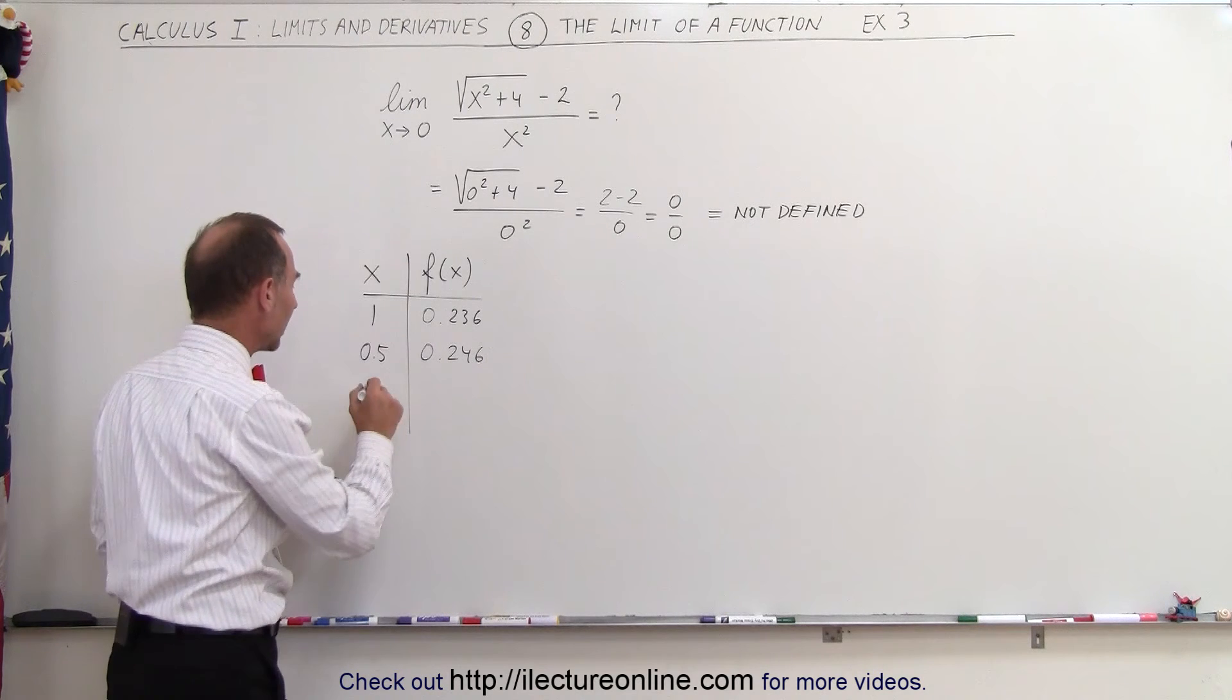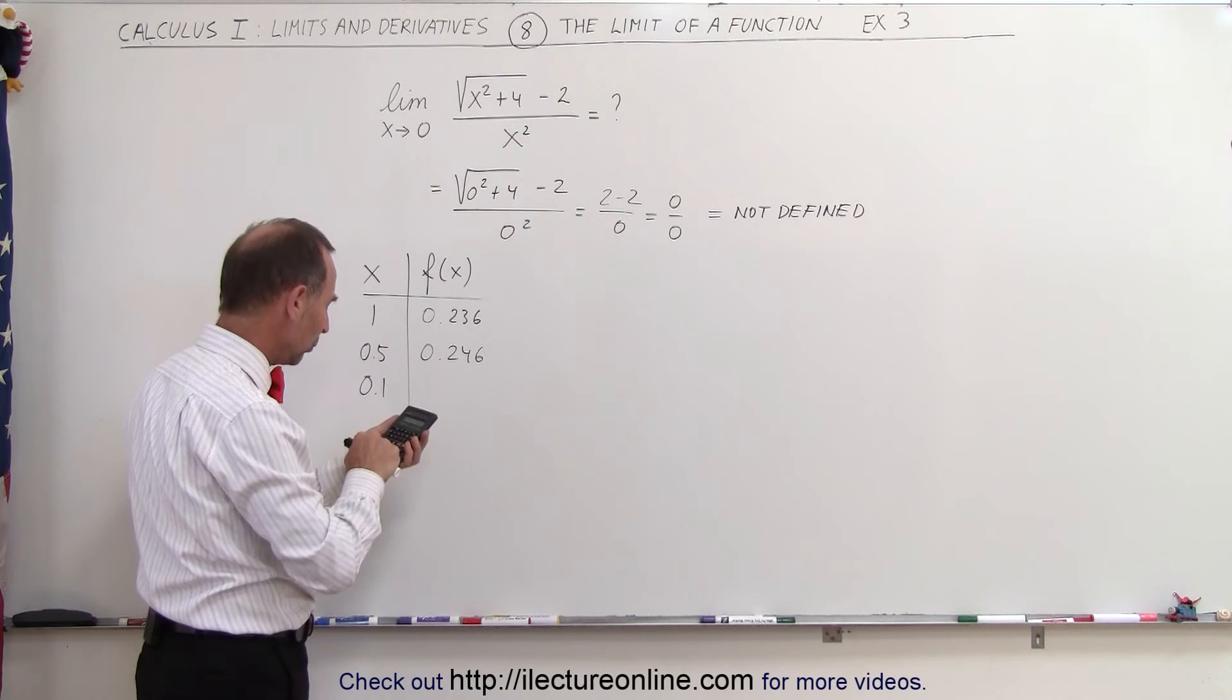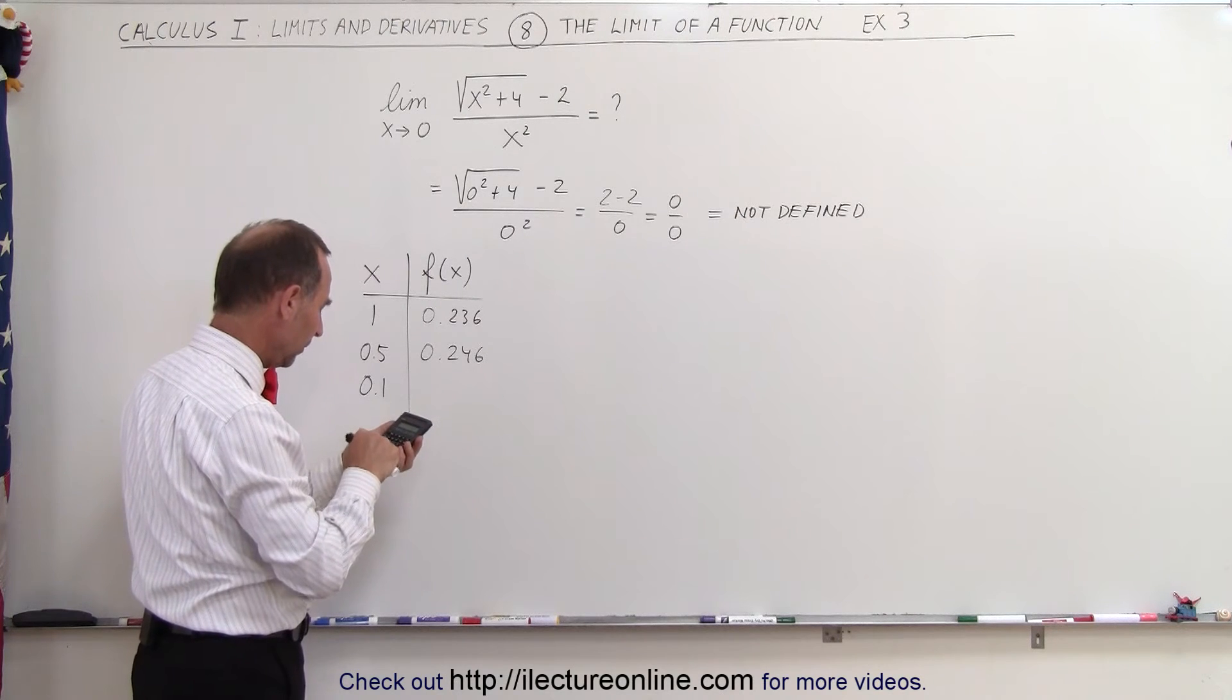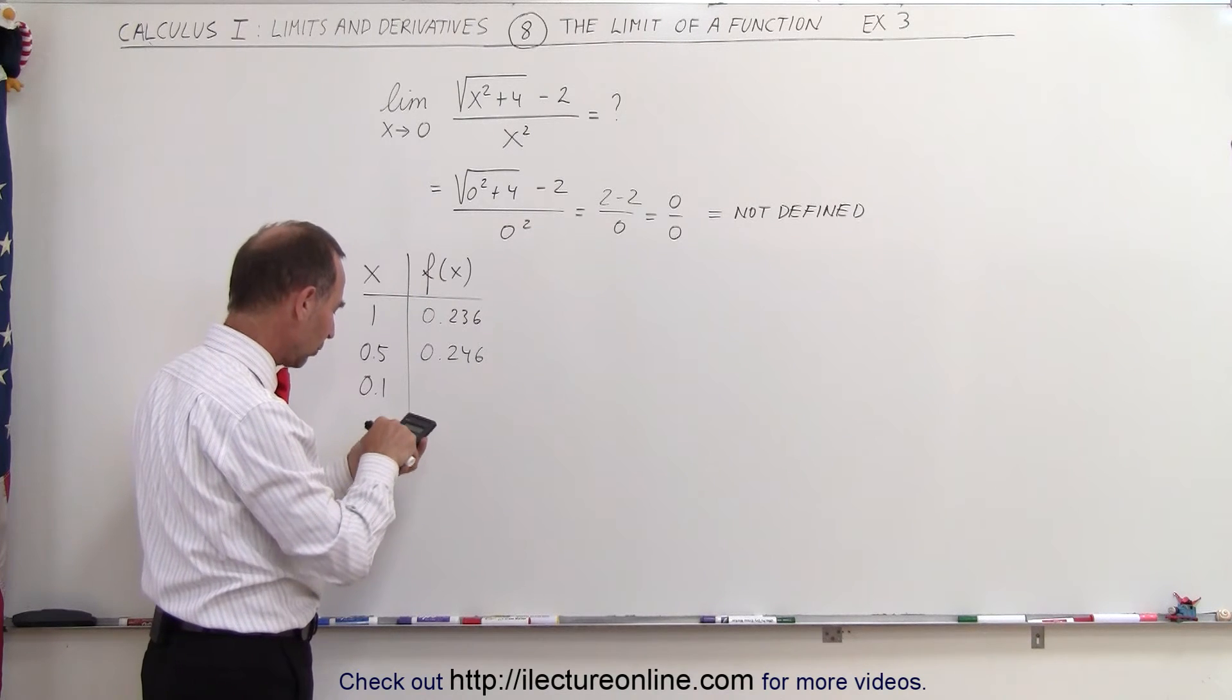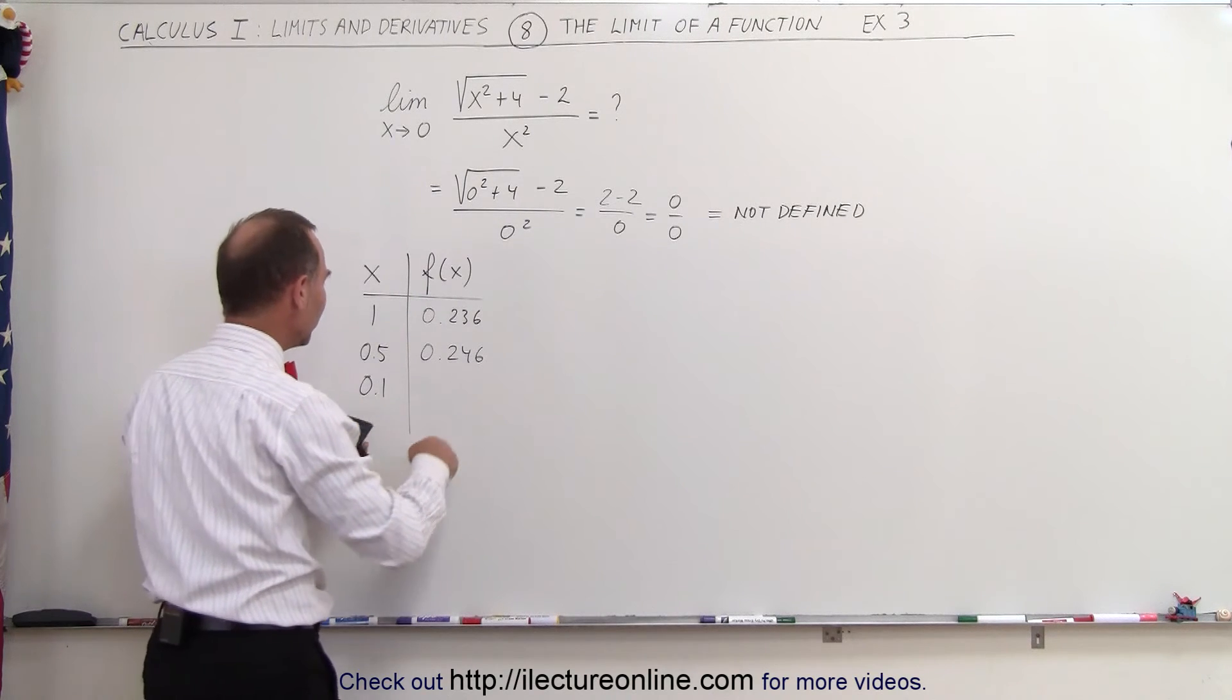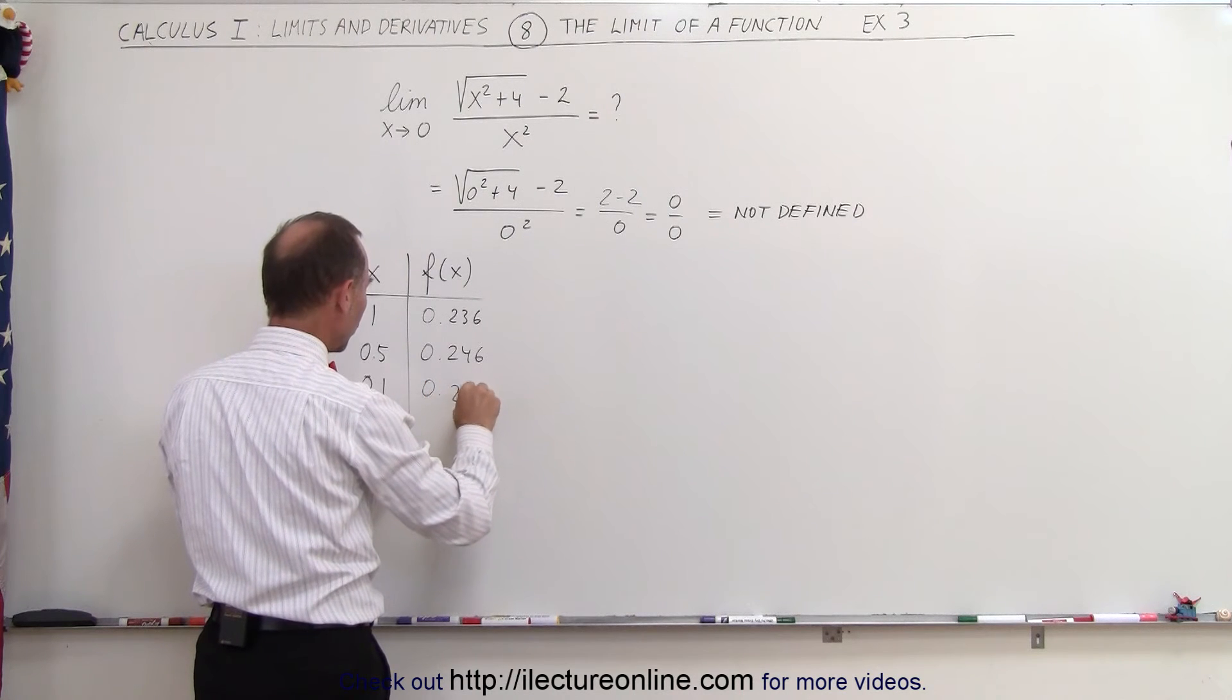All right, what happens now when we let x equal 0.1? So now we have 0.1 squared plus 4. Take the square root, subtract 2, and divide by 0.1 squared equals. And now we get the value 0.2498.